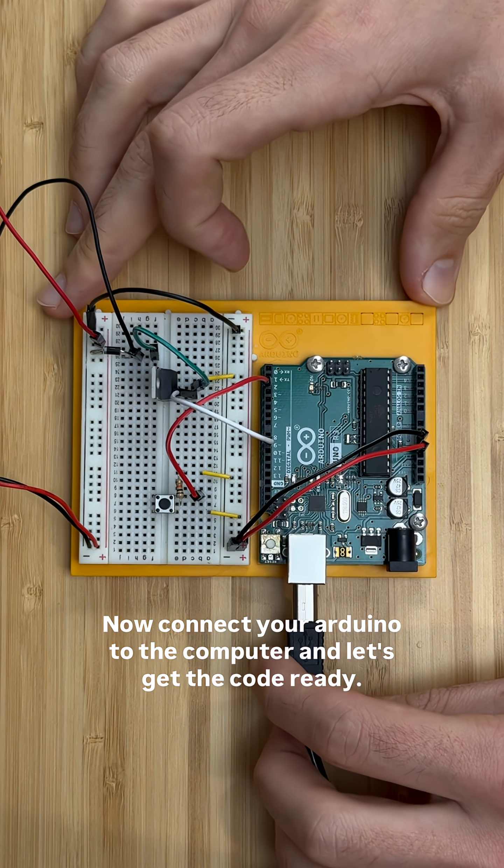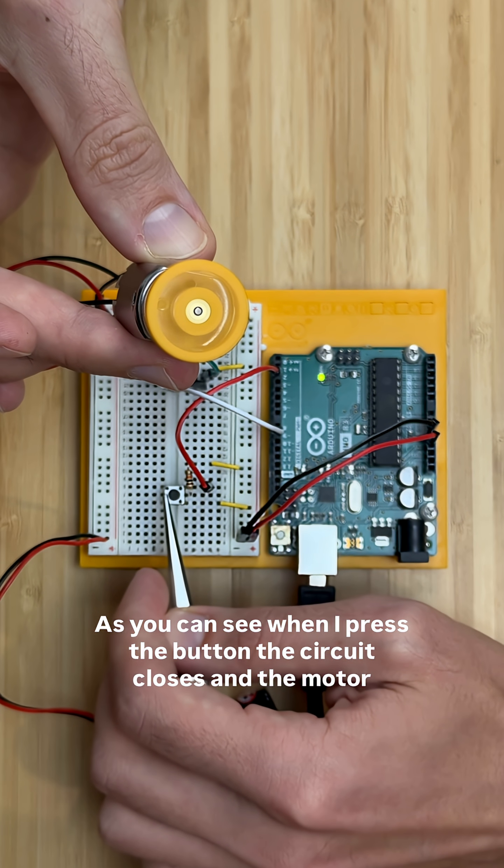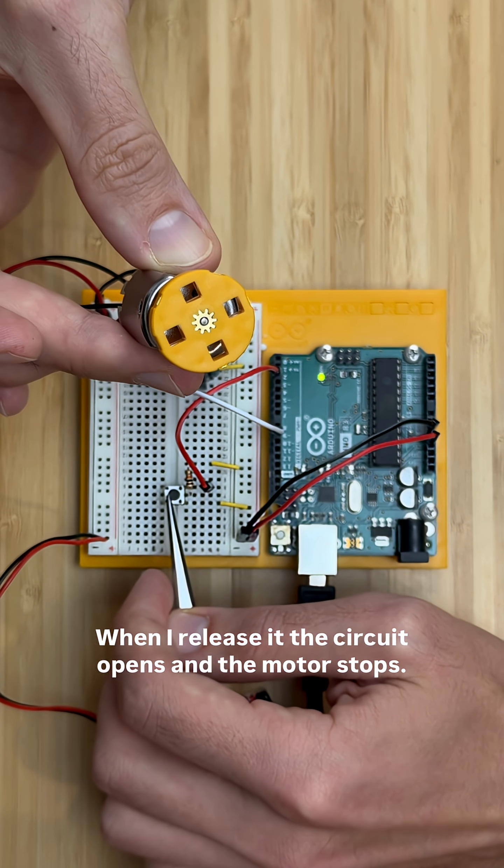Now connect your Arduino to the computer, and let's get the code ready. As you can see, when I press the button, the circuit closes and the motor starts spinning. When I release it, the circuit opens and the motor stops.